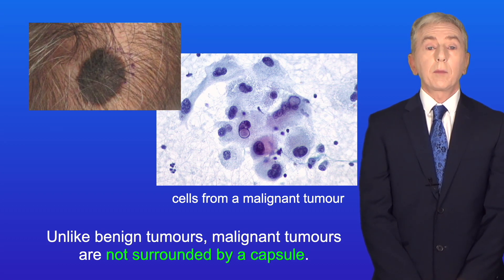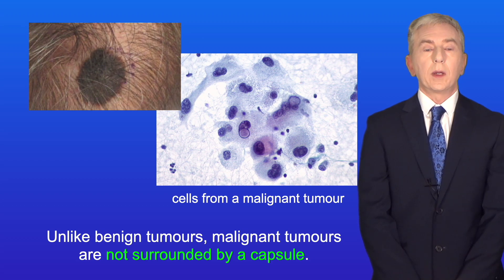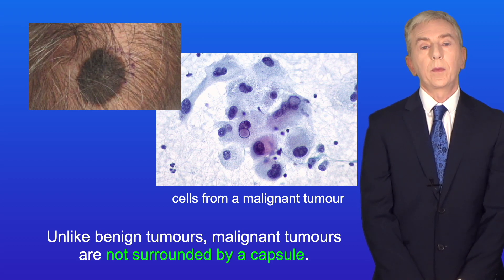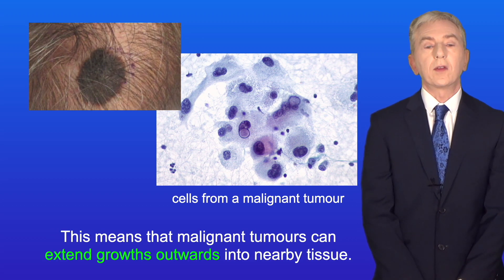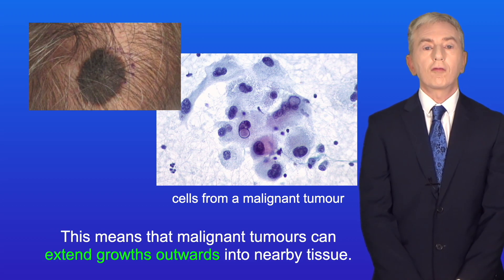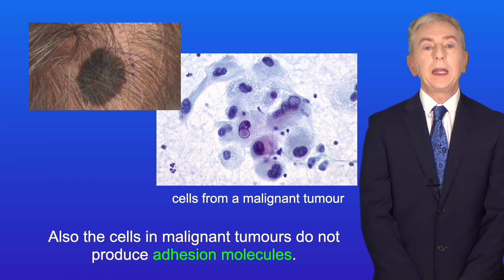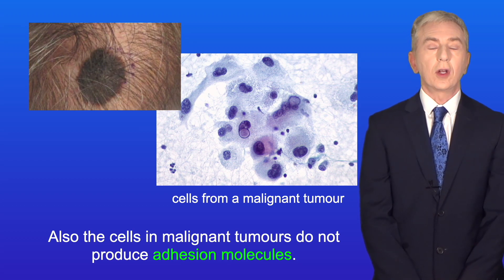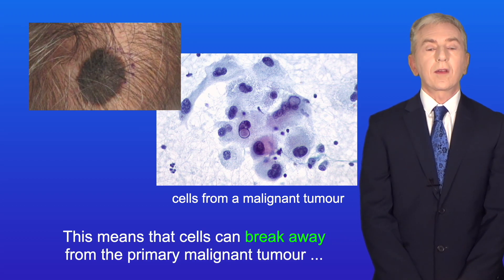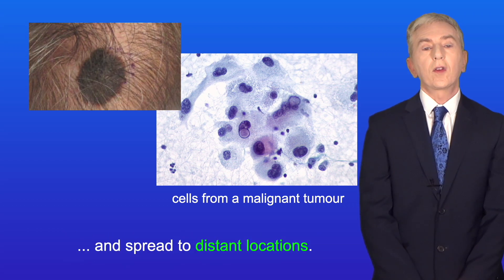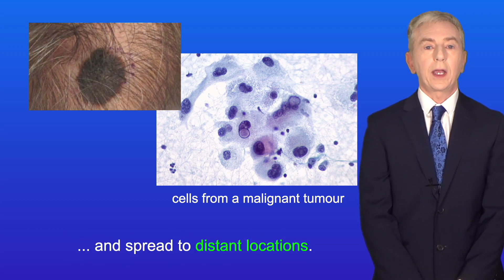Unlike benign tumours, malignant tumours are not surrounded by a capsule, which means that malignant tumours can extend growths outwards into nearby tissue. Also, the cells in malignant tumours do not produce adhesion molecules, which means that cells can break away from the primary malignant tumour and spread to distant locations.